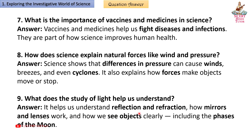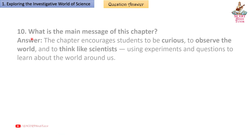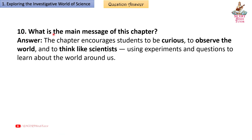Question 9: What does the study of light help us understand? Answer: It helps us understand reflection and refraction, how mirrors and lenses work, and how we see objects clearly, including the phases of the moon.